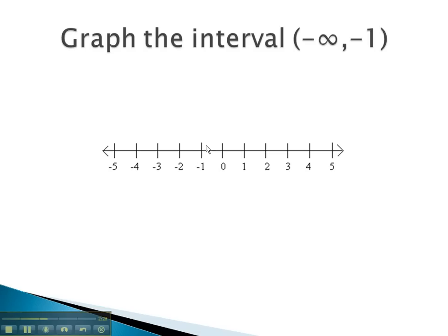We recall from graphing inequalities that we use an open dot when we're not exactly equal to the number. Negative infinity is the other side, showing the graph is going off the left side. Coloring in our shade gives us the graph that matches the interval negative infinity to negative 1.